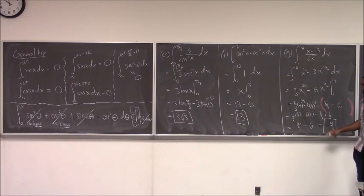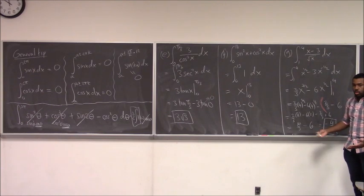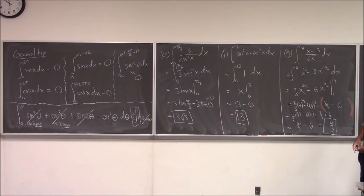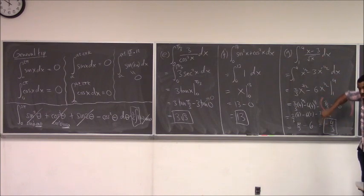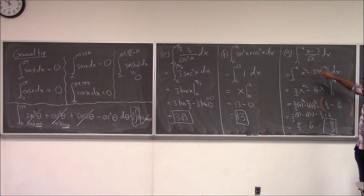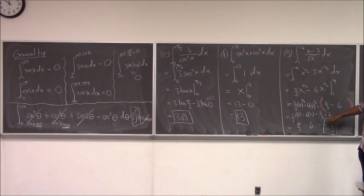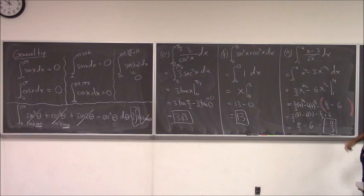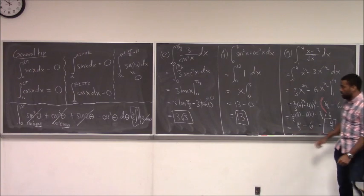When you get a negative answer, geometrically that means the graph goes both above and below the x-axis, and the portion below is larger than the portion above. That's where the negative answer comes from.